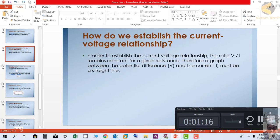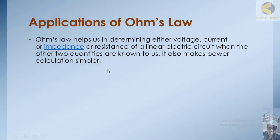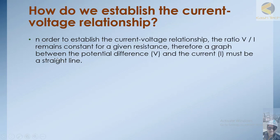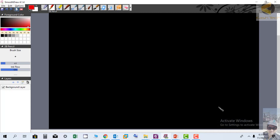Ohm's law helps us in determining either voltage, current, or resistance of a linear circuit when the other two quantities are known. It makes power equations simpler. To establish the current-voltage relationship, the ratio V over I remains constant for a given resistance. Therefore, a graph between potential difference V and current must be a straight line. If you apply voltage twice, you get current twice, meaning there is a constant quantity — and that constant quantity is resistance.